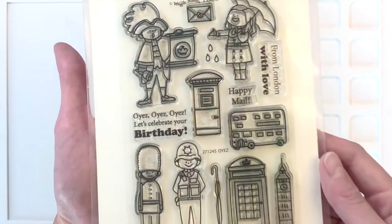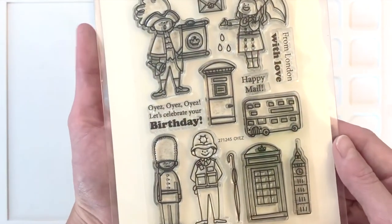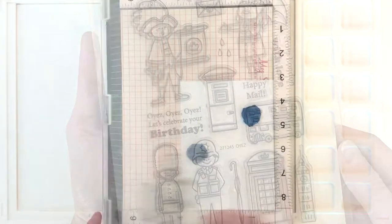We're going to start today's project with the Oyez stamp set. This is the images, it's all kind of London themed, really cute.